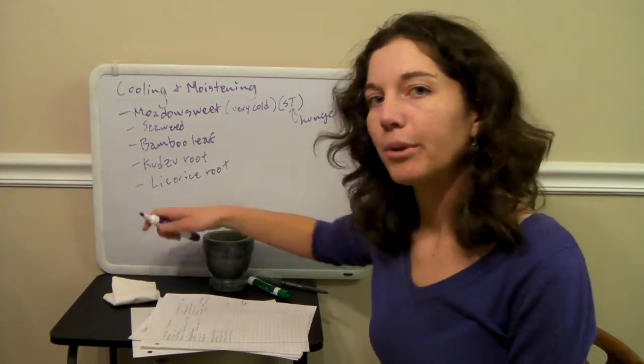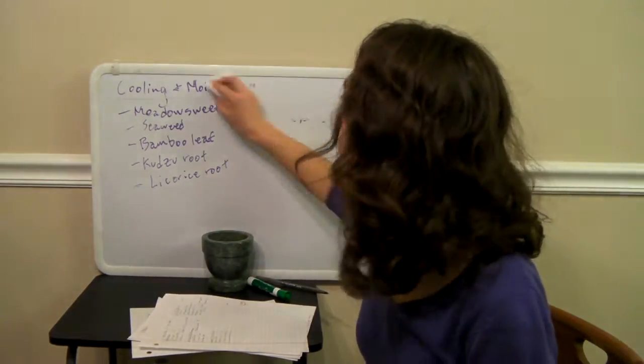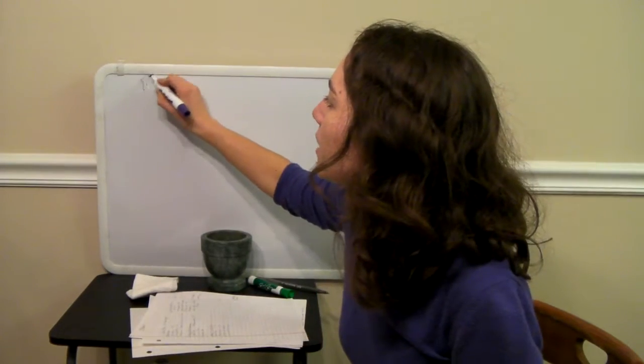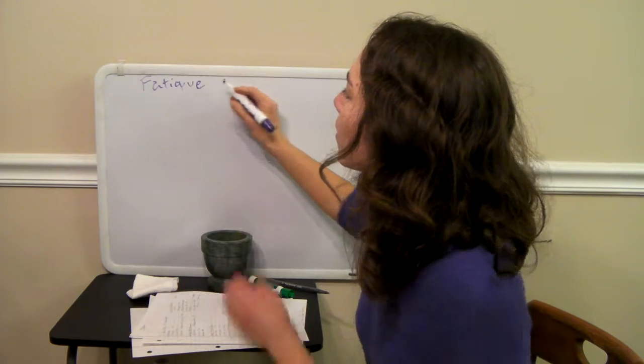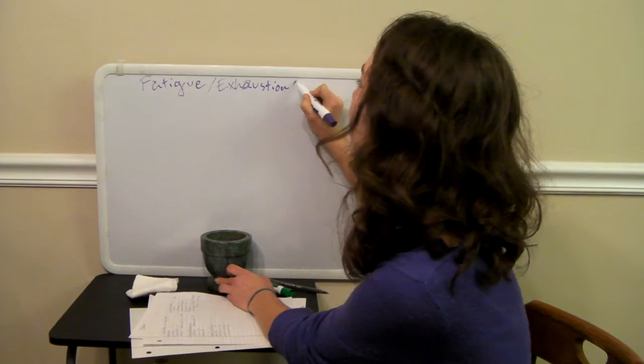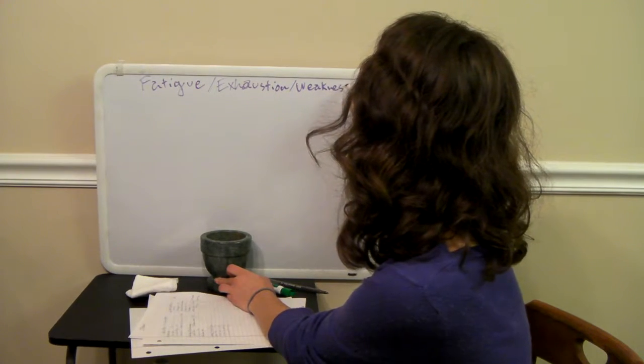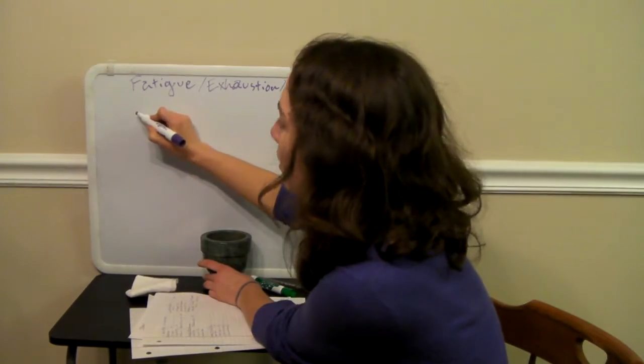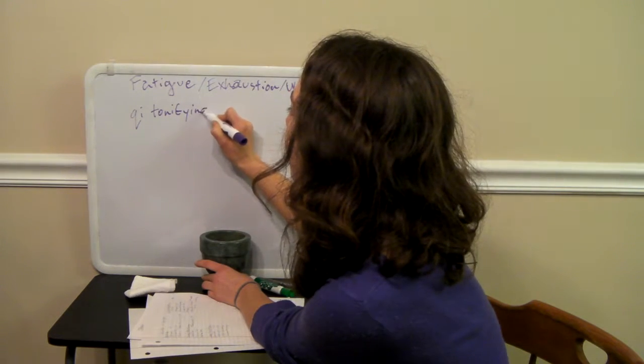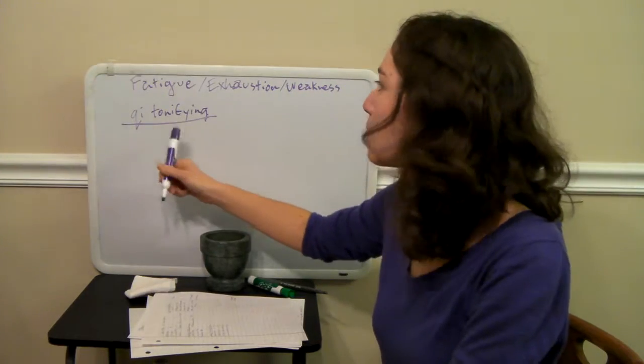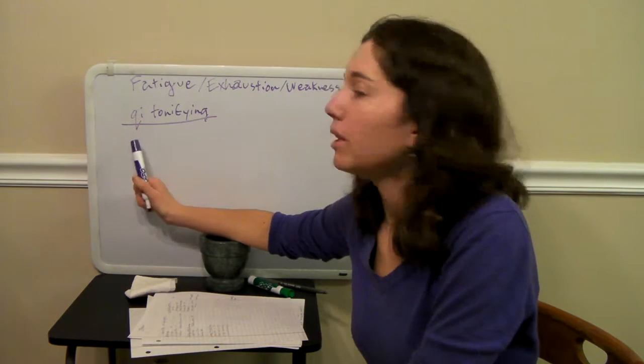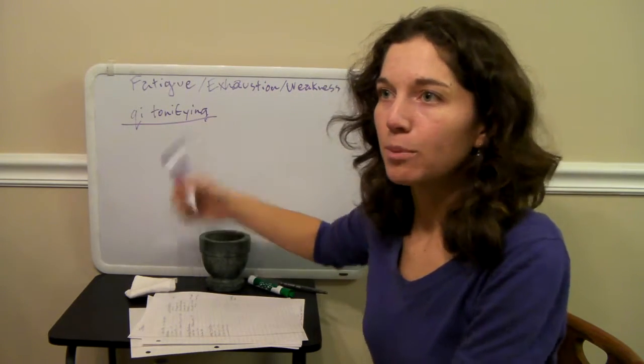Now, if you have someone that has diabetes and they have fatigue or just they're kind of tired, exhaustion, maybe even just weakness, it might be mild, I would suggest using some qi tonifying herbs. Most people are going to need this because most people have stage 2 diabetes. And we had talked earlier that by stage 2 you need some qi tonifying herbs. And most people are in this stage by the time they get diagnosed with diabetes.